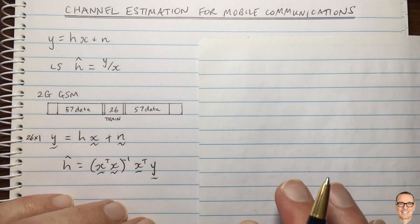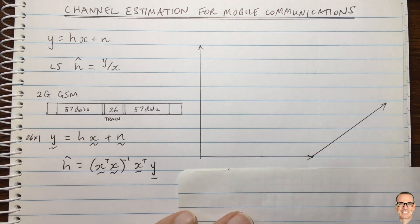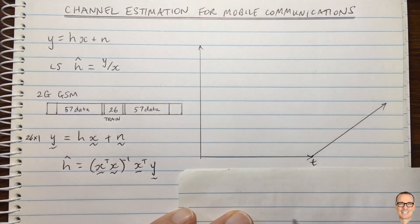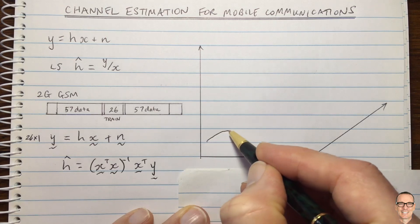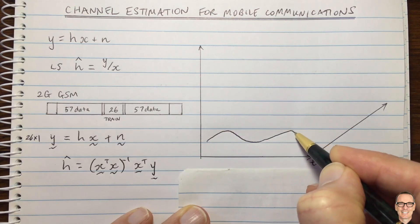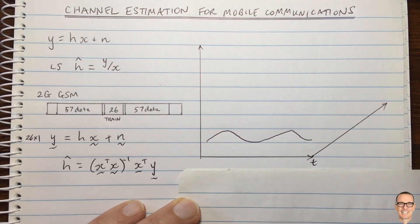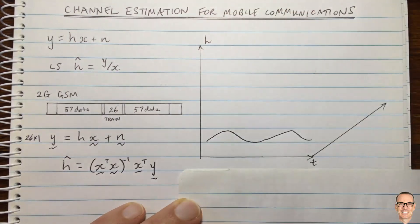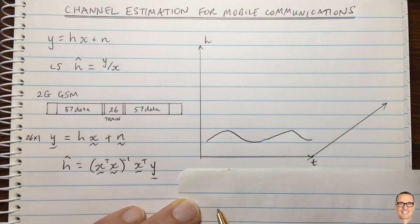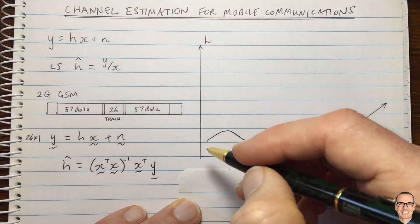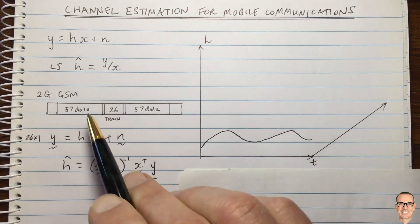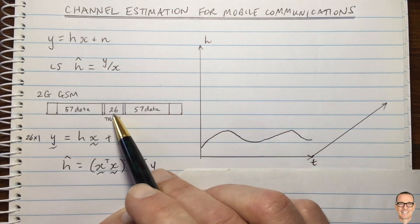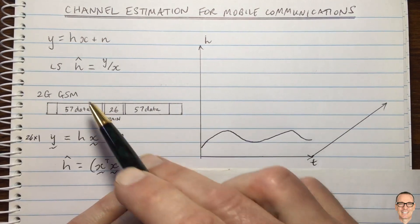Let's think about the more general case. The channel does actually change with time if we are looking over longer time periods. Here's a hand sketch drawing of how the channel variation might happen. This is the channel value h as a function of time. We can think about actually sampling this. This is a sample, 26 samples every packet for GSM.